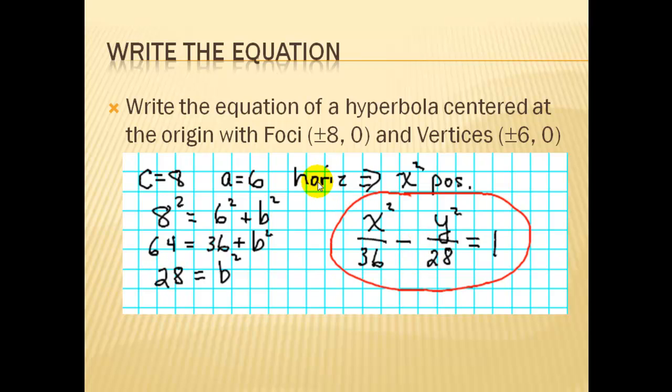Since it was horizontal, since these were on the x-axis, we make x squared positive, and the A goes under the x squared, so that's our equation. I think this is the end of our hyperbola tutorial, and wish you luck in working your problems.